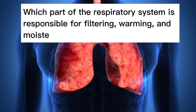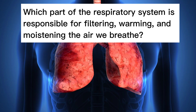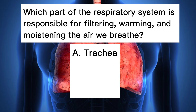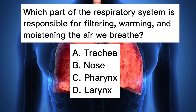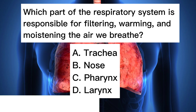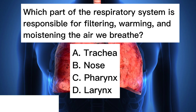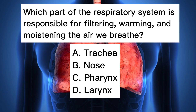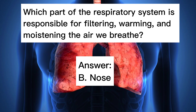Which part of the respiratory system is responsible for filtering, warming, and moistening the air we breathe? A. Trachea. B. Nose. C. Pharynx. D. Larynx. Answer: B. Nose.